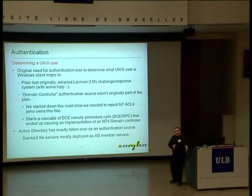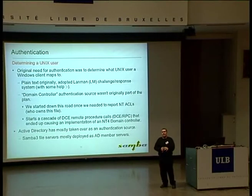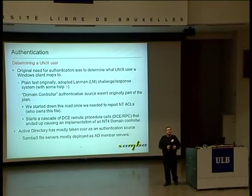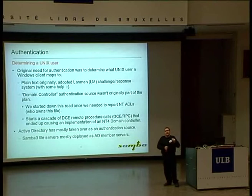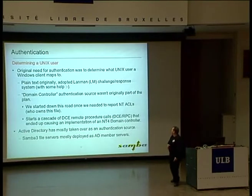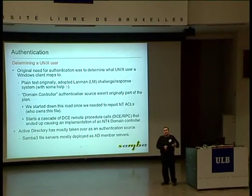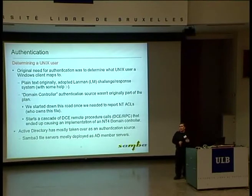As soon as we said we support Windows ACLs, the Windows clients started making all these other calls we didn't understand. After a lot of work over many years we ended up implementing DCE — Distributed Computing Environment Remote Procedure Calls — to handle this. Once you've solved that part of the problem you're like 50 or 60% of the way to doing full domain control, so it was like, well, why not finish it? That's essentially how Samba became an NT4 domain controller — we were originally just a file server and we really didn't care. Now in most enterprises Active Directory has taken over as an authentication source, so Samba 3 really gets deployed as a member server in an Active Directory environment.